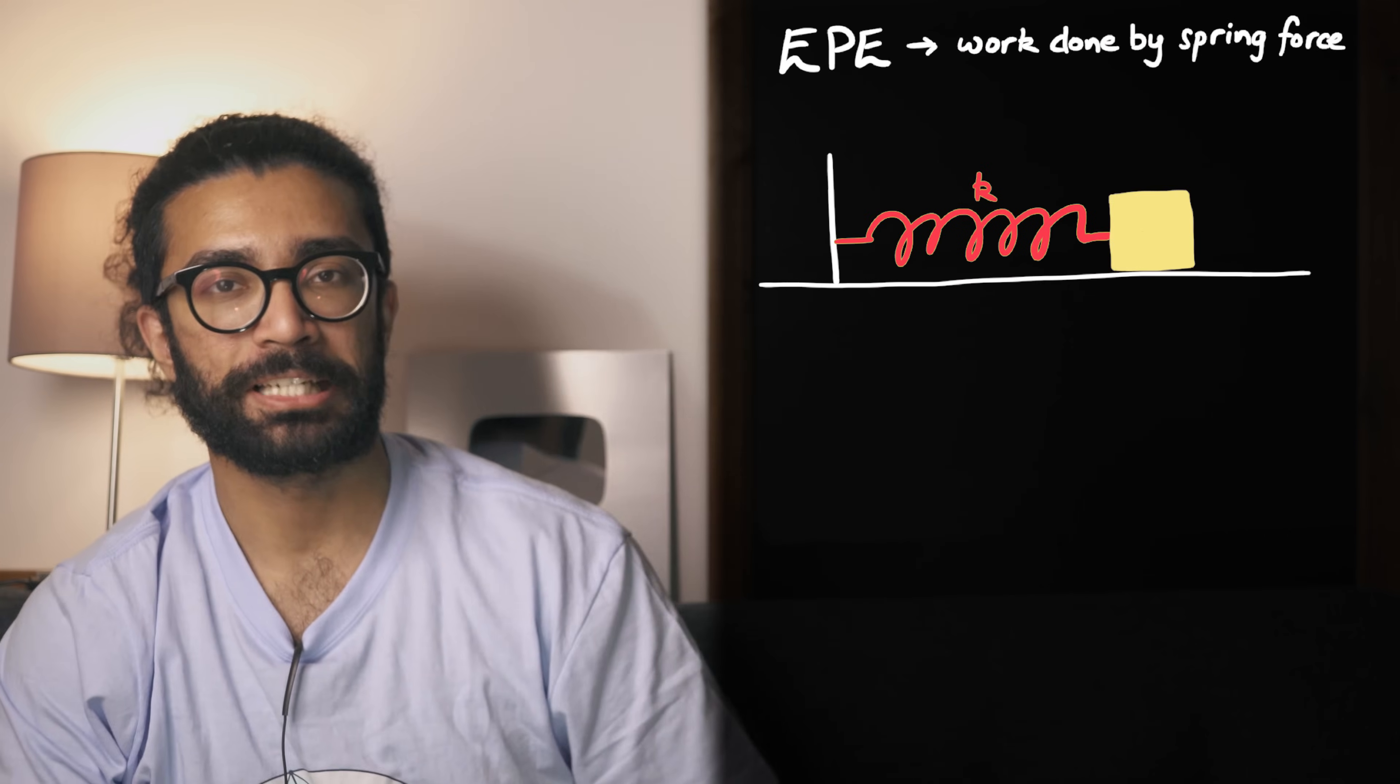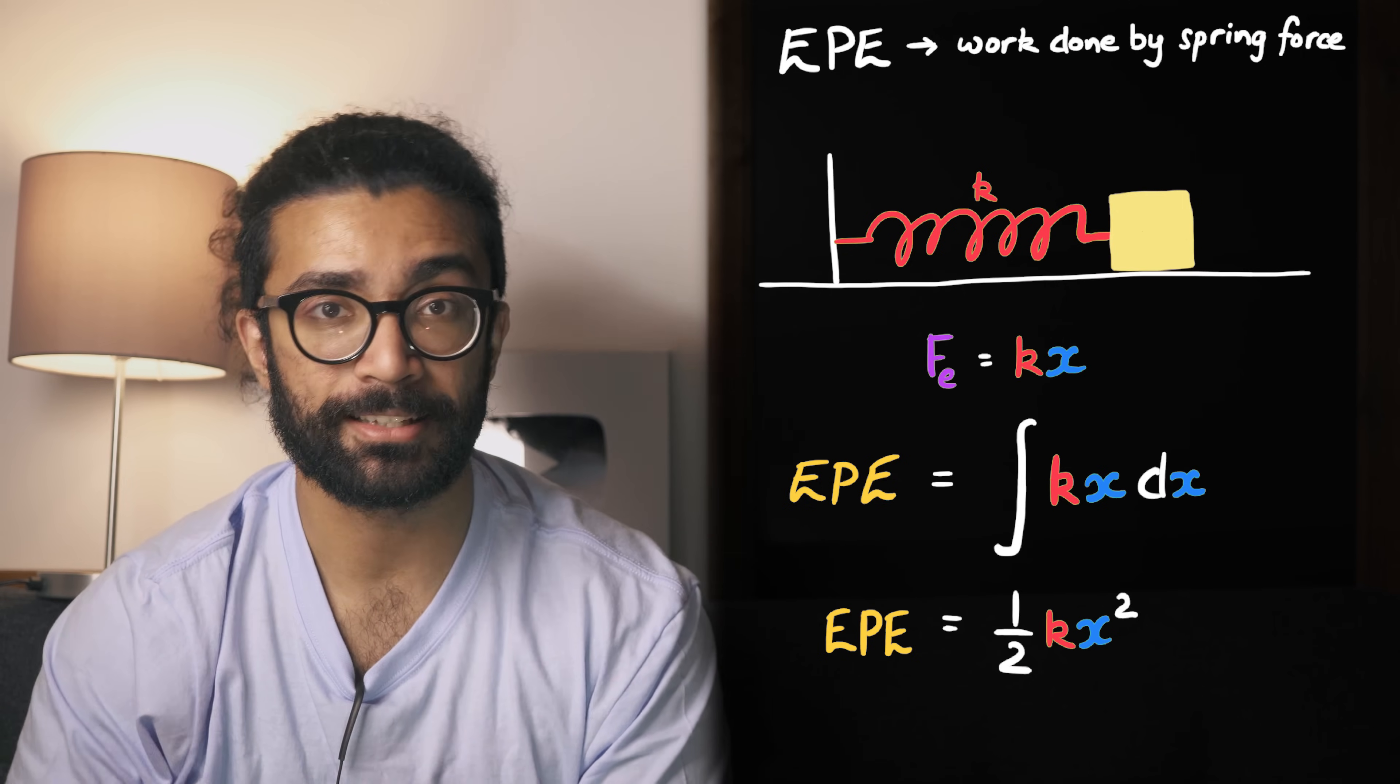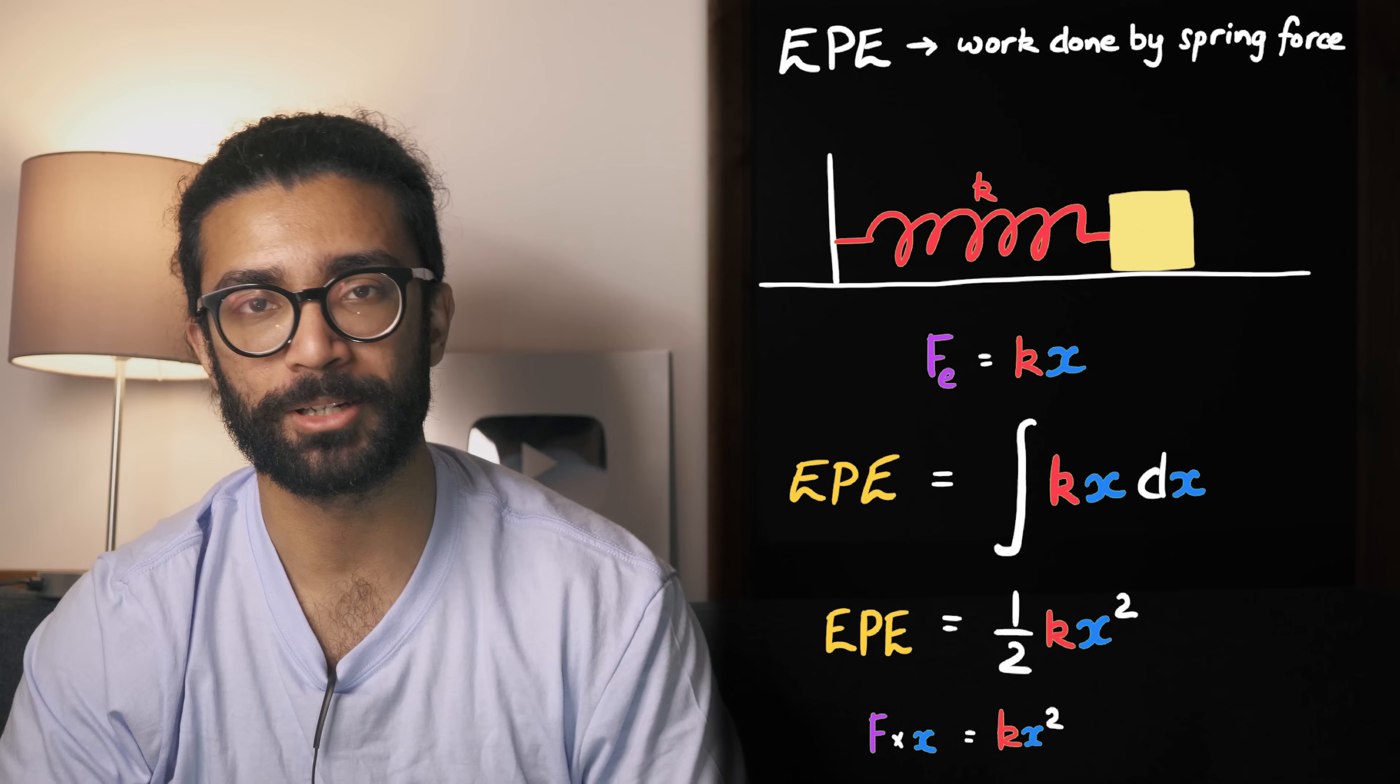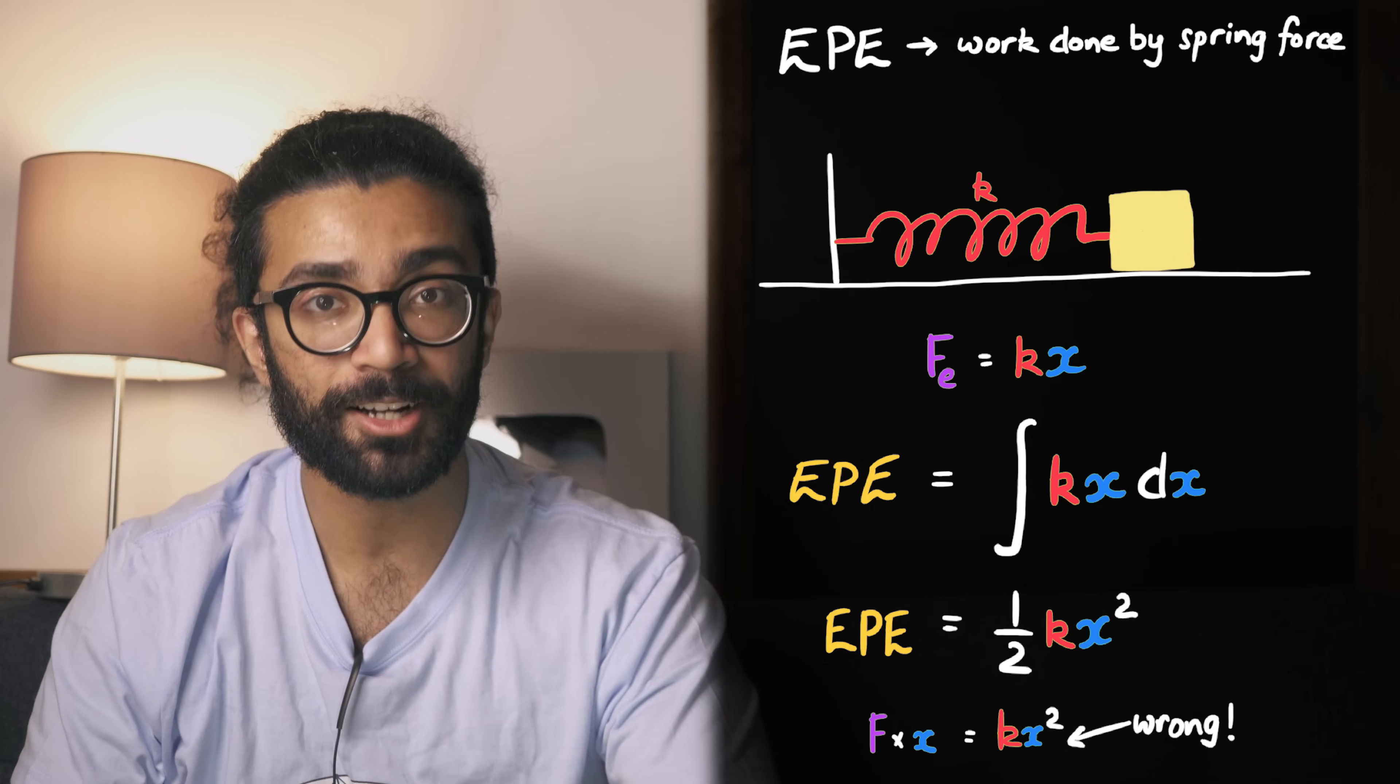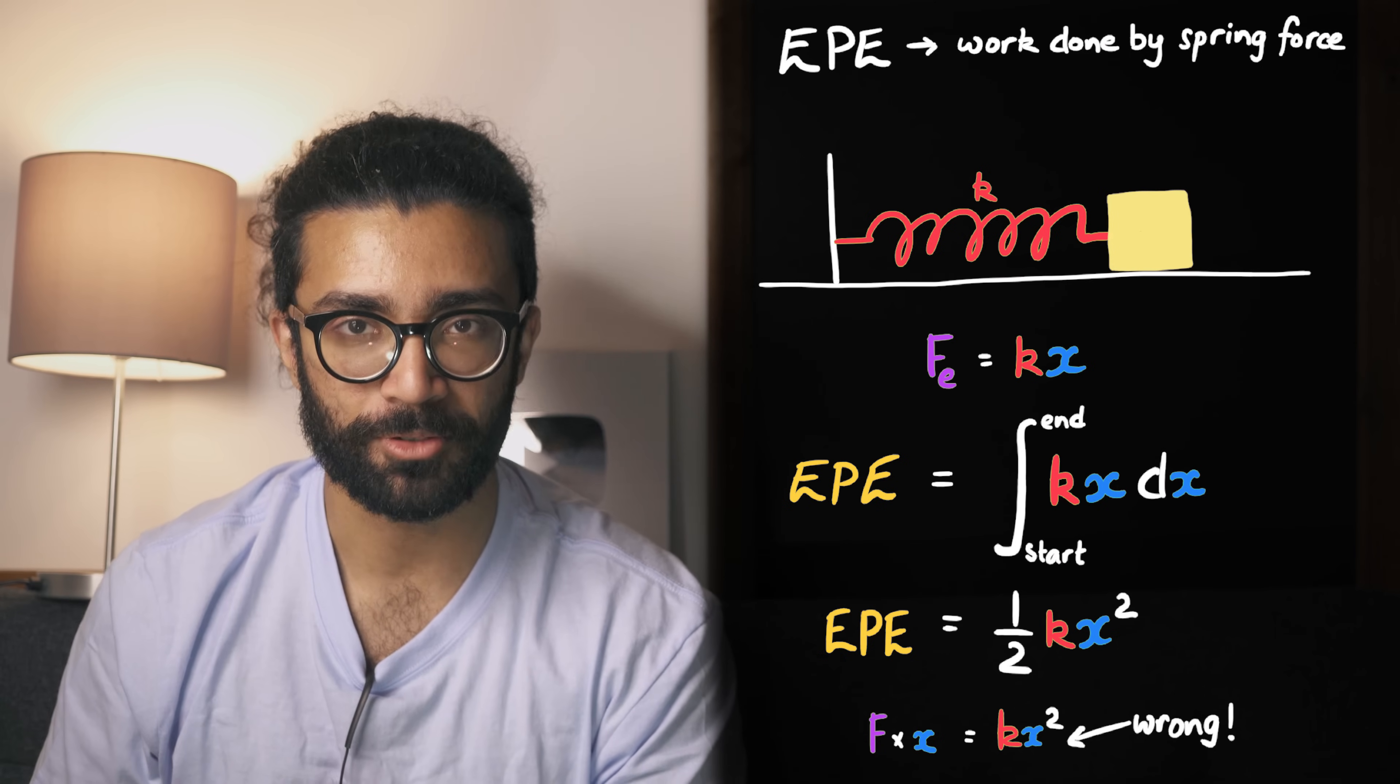And, when we think about, the elastic potential energy, of a spring, this more correct work equation, gives us the correct, elastic potential energy equation, that we're used to seeing. The force exerted by a spring, is Kx, and so when we integrate this, we get, half Kx squared. If we use just the basic, force times distance, work equation, we would be missing, the factor of one half. Now for those of you, that know about integration, notice how we aren't adding, a constant of integration. That's because, this is a definite integral, with limits. The limits, are the start, and end point, of the object's motion. And this, is where things get interesting.